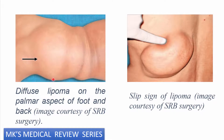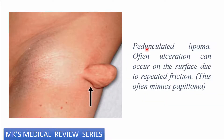Here's an image of a diffuse lipoma on the palmar aspect of the foot and the back. Then this is a slip sign — if you apply pressure with your palpating finger, it slips away. Those are features of a lipoma. Then here is a pedunculated lipoma. Often, like I already told you, these tend to ulcerate because of repetitive friction. So this can sometimes look like a papilloma — you may confuse this with a papilloma.